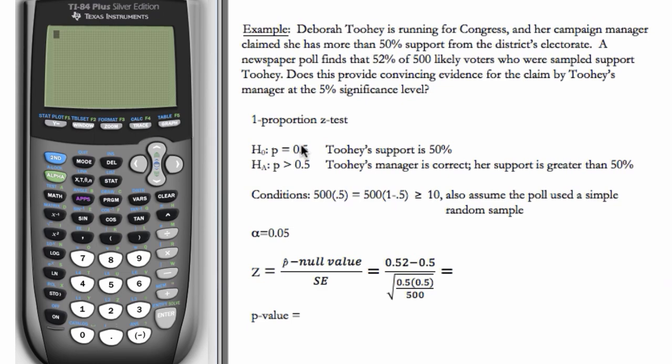We know we want to calculate a one-proportion Z-test. We have our null hypothesis that her true proportion of support is 0.5, and the alternate hypothesis that her true proportion of support is greater than 0.5.